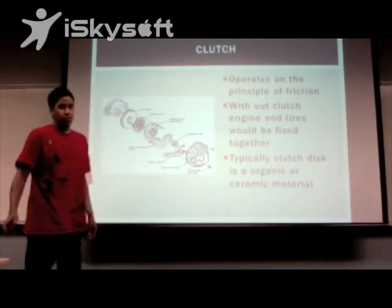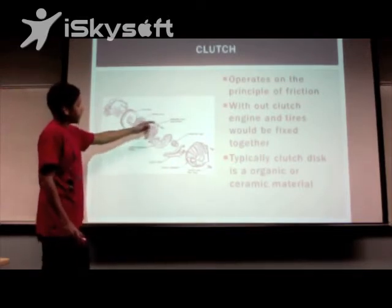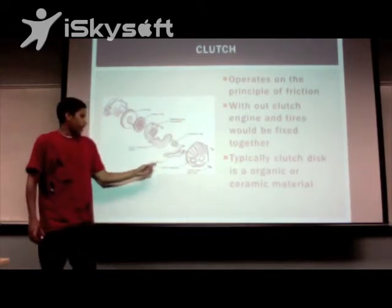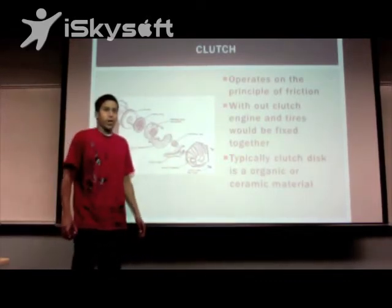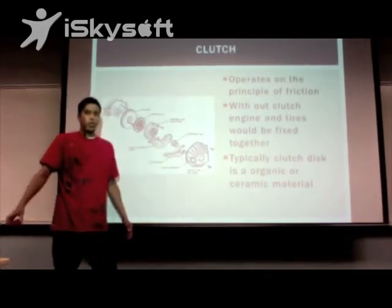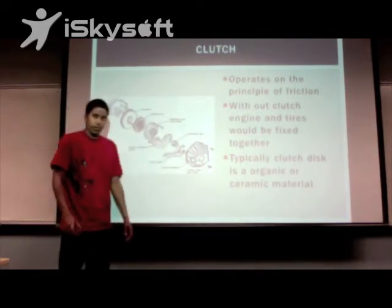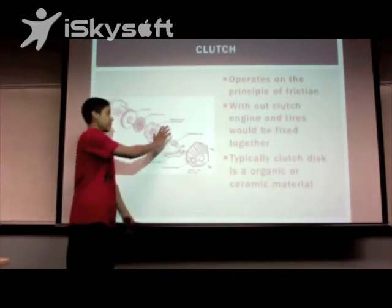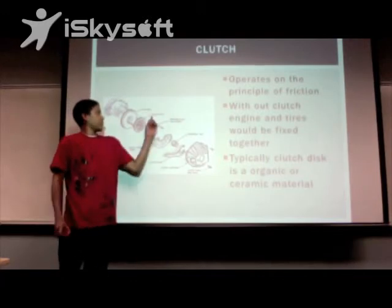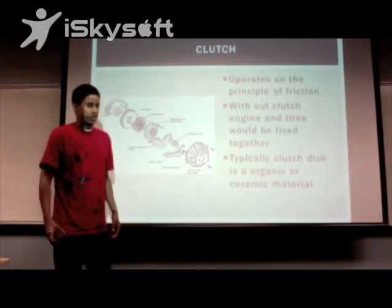A clutch operates on the principle of friction. A typical clutch assembly consists of a clutch plate, a pressure plate and pressure spring, a throttle bearing, and a clutch fork. When the driver engages the clutch, a hydraulic piston presses down on the clutch fork, which presses the throttle bearing forward into the plate spring. The plate spring then releases the pressure from the pressure plate off of the clutch plate. The clutch plate is now completely removed from the flywheel and the motor is spinning freely in idle position.